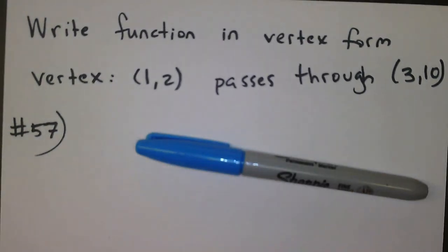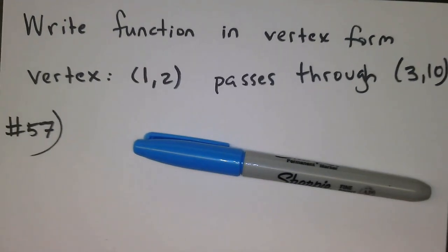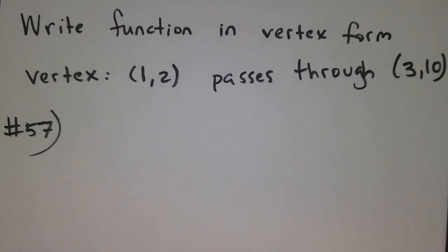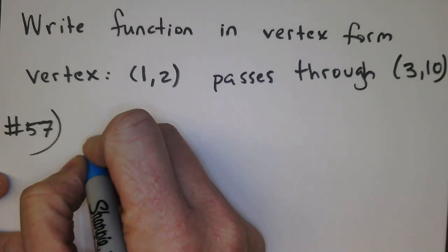This is number 57 from 3-4. We are asked to write a function in vertex form. They're going to give us the vertex, they're going to tell you it passes through a certain point.